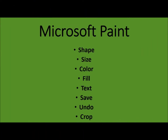In summary, we've learned some of the general features of Microsoft Paint: how to design a shape, how to resize that shape, how to change the color and fill, how to add text, how to save, how to undo an error, and how to crop. That's the end of our tutorial — there will be more to come.